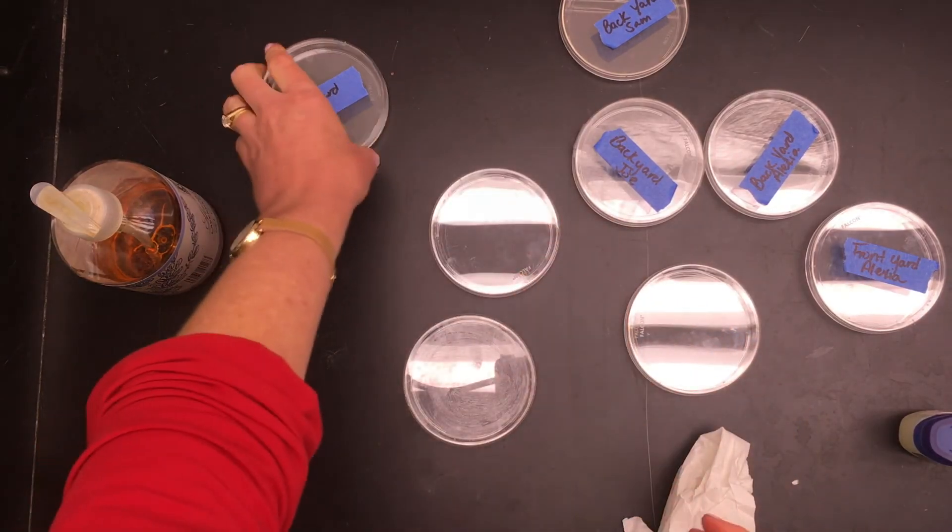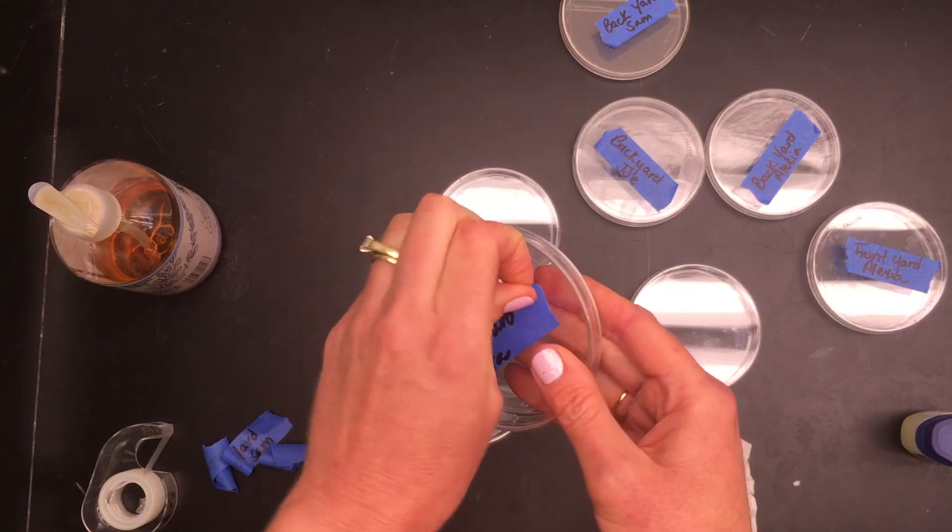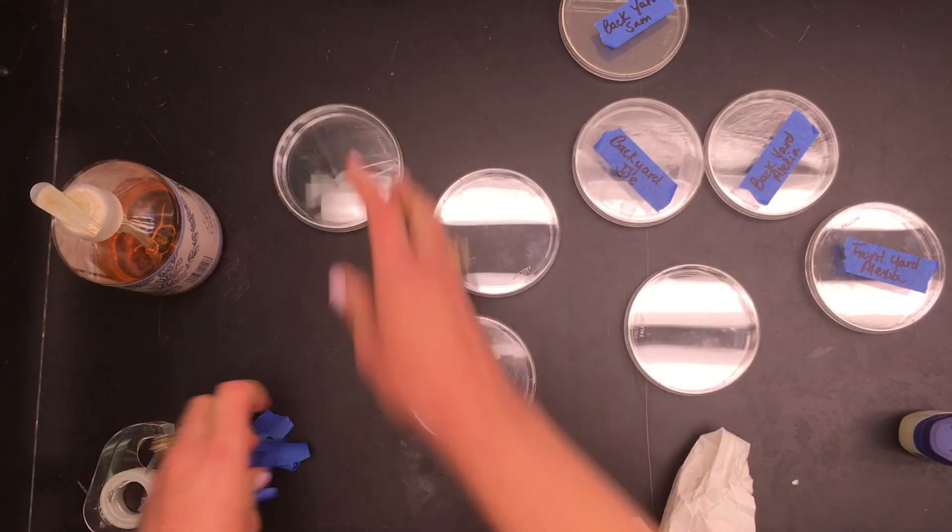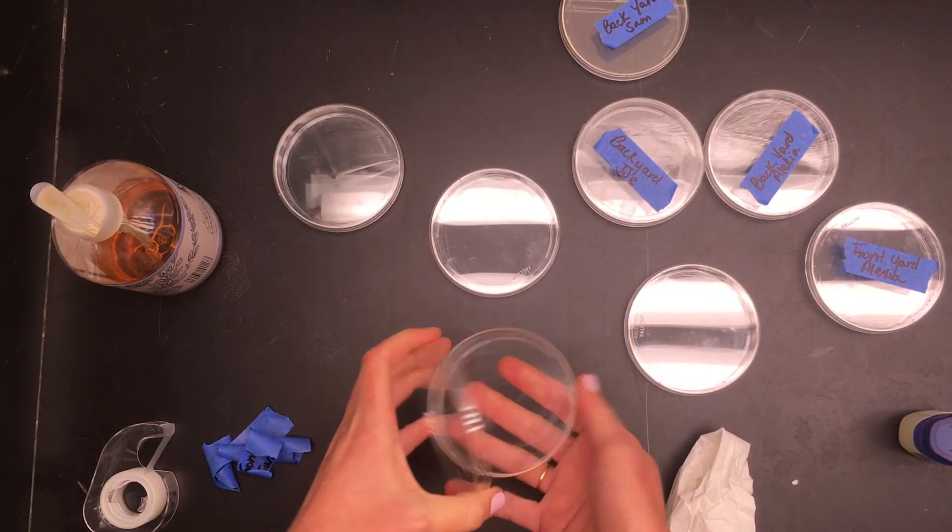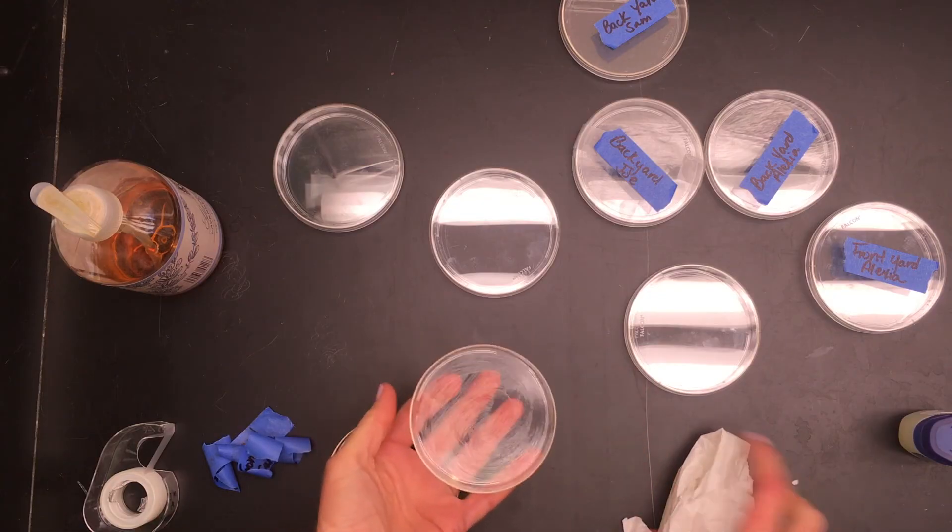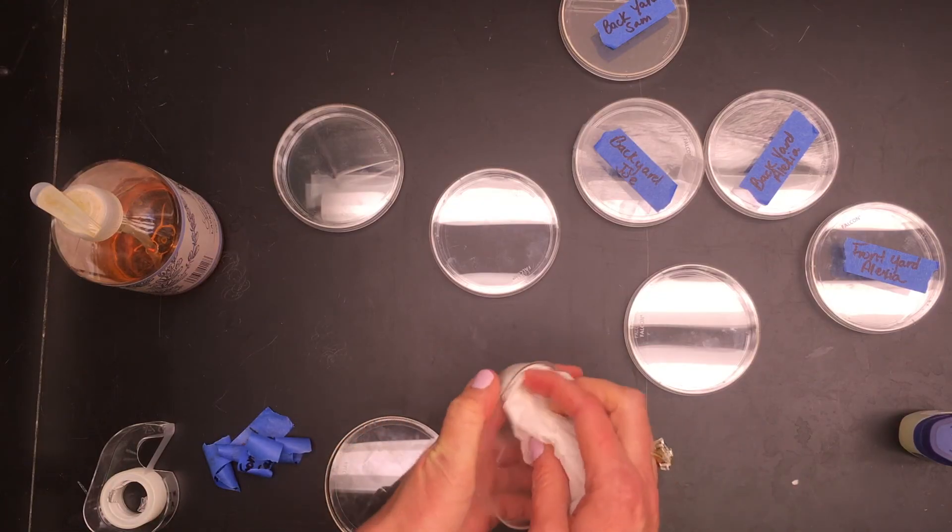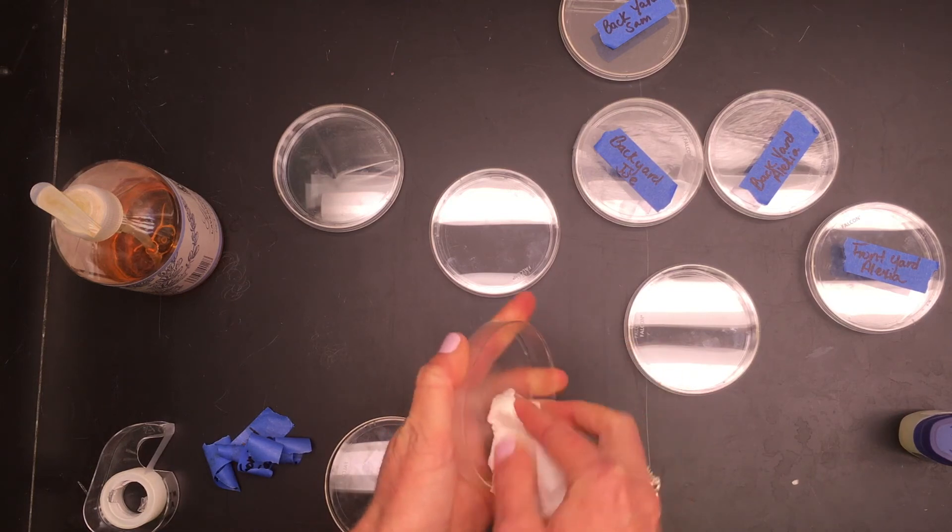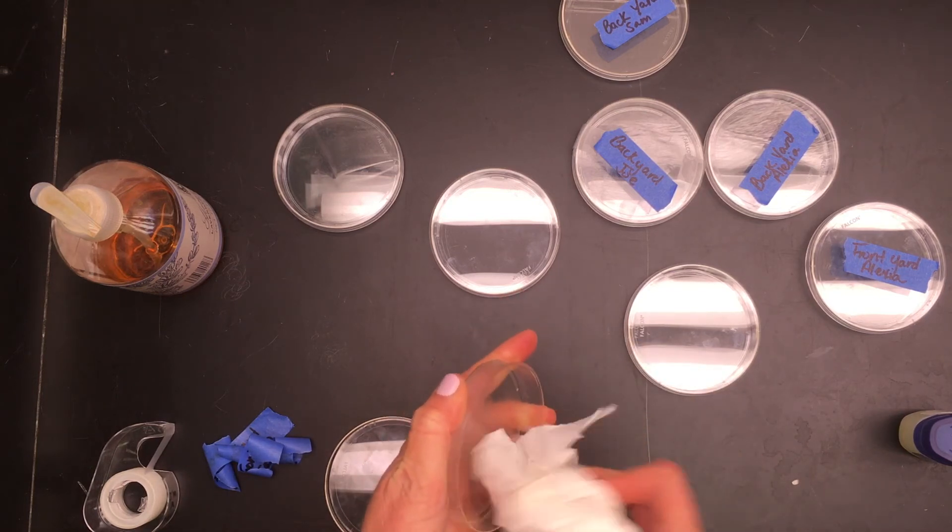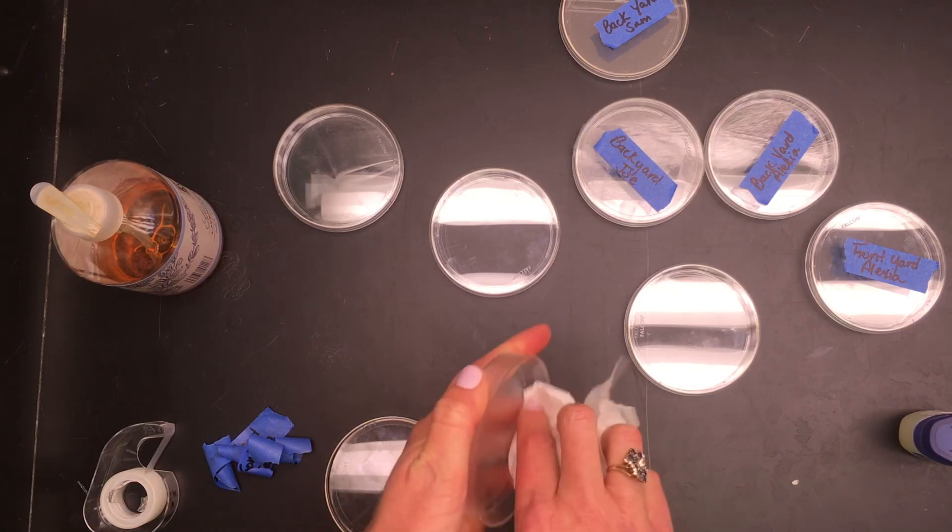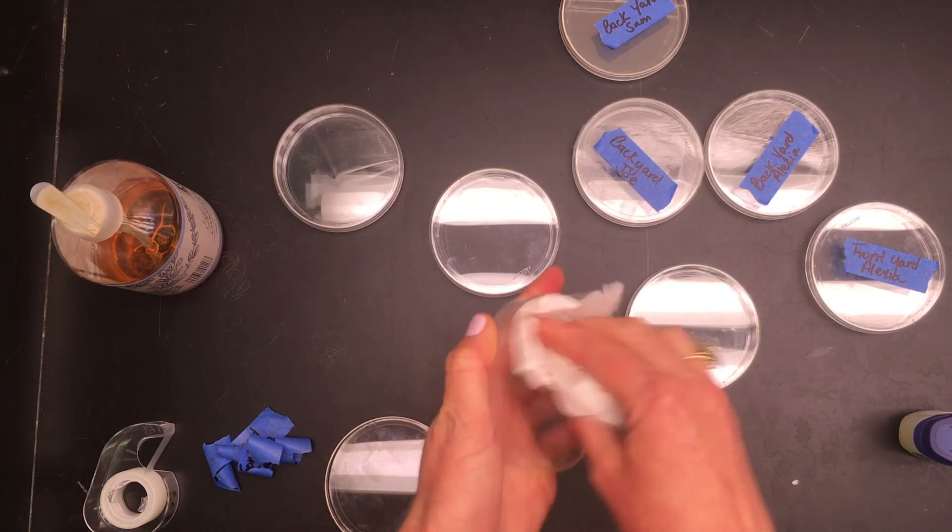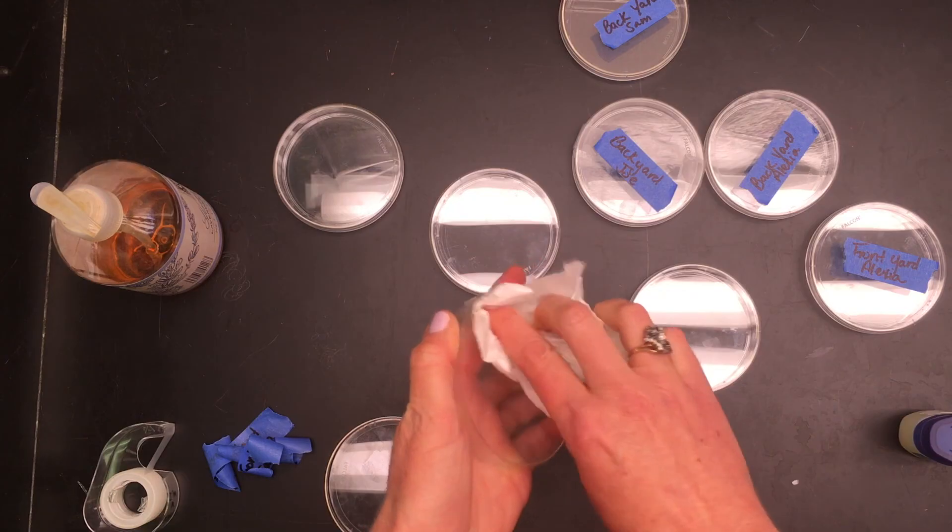Petri dishes are plastic, so we want to keep them out of the landfill. They can be reused again and save some money on petri dishes for the following year. So you're gonna have petroleum jelly in the bottom of your dish. First thing you do is just take a paper towel and wipe most of it out.